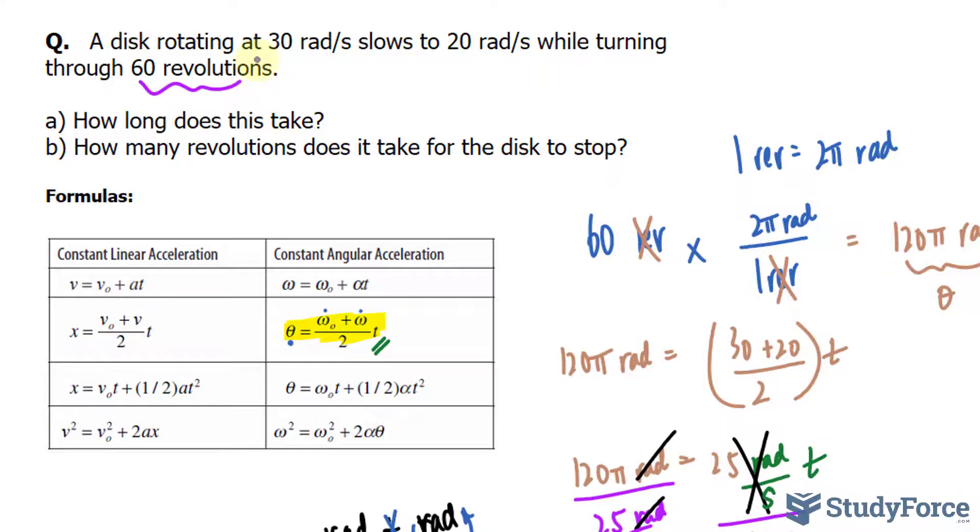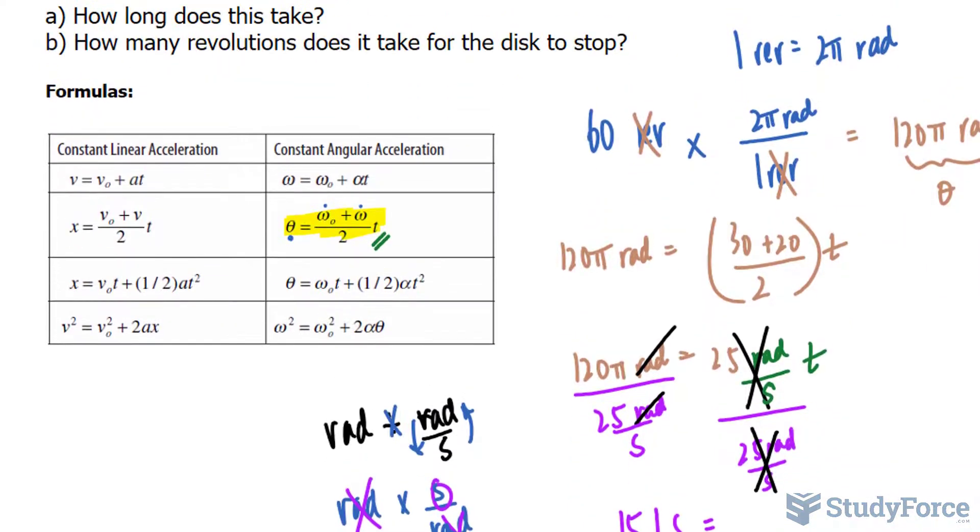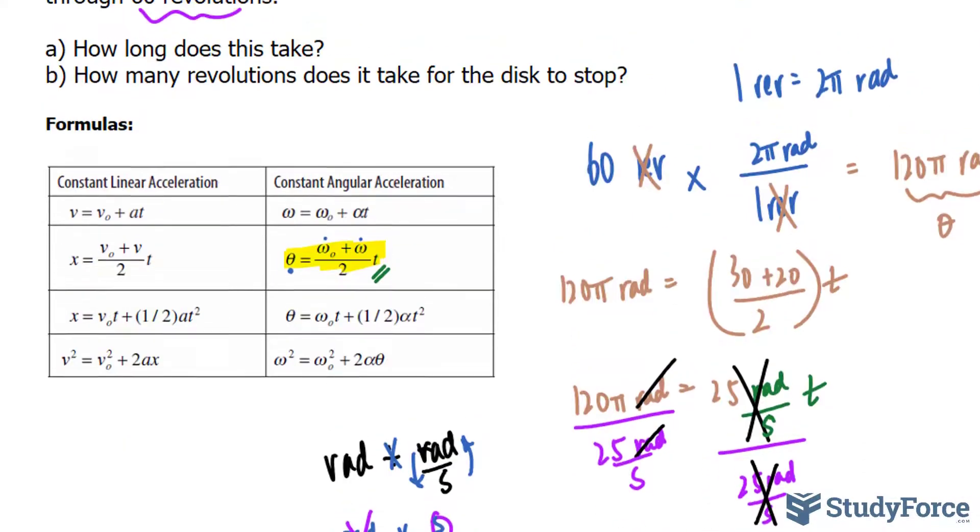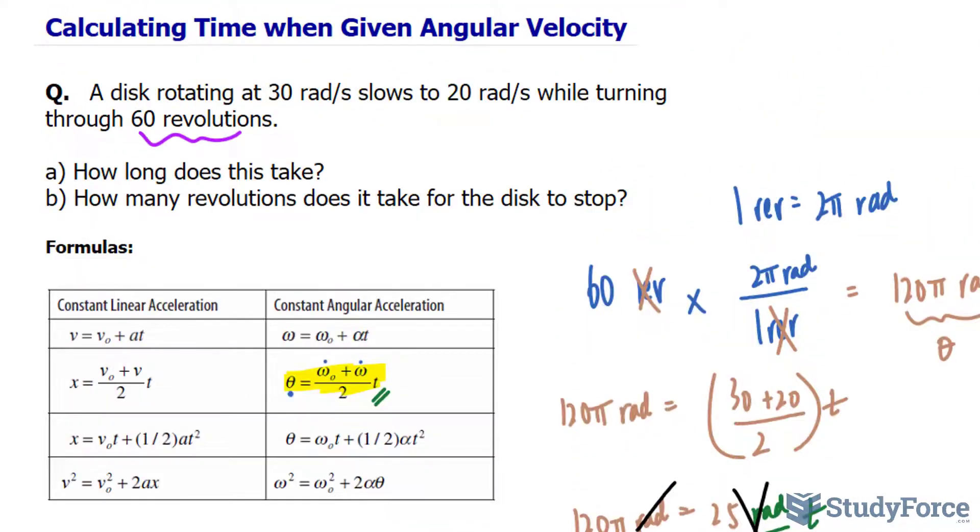Now for question B, how many revolutions does it take for the disc to stop? That's interesting. So for the disc to stop, the final angular velocity should equal to zero.